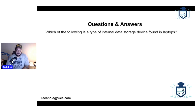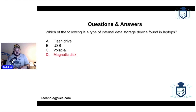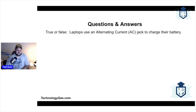The first question: which of the following is a type of internal data storage device found in laptops — a flash drive, USB, volatile, or magnetic disc? The correct answer is magnetic disc. Flash drives are not inside laptops; USB is a connector for external devices; volatile means something has potential to disappear in the context of computer memory. Magnetic disc is the correct answer.